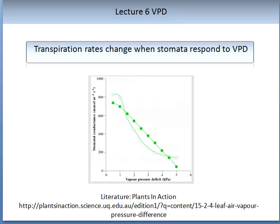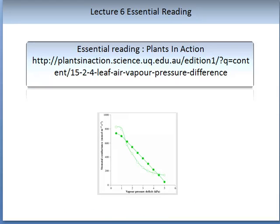Experimental evidence supports the link between VPD and transpiration rates. Stomata are responsive to atmospheric vapour pressure deficit so that potentially faster transpiration rates at low atmospheric humidity are constrained by the partial closure of the stomata — that is, a decrease in stomata conductance. Patterns of response differ between species. Common forms of stomata conductance response to vapour pressure deficit are shown here for leaves with initially high rates of gas exchange and photosynthesis. Please read Plants in Action at the link below, which explains in more detail the response between stomata conductance and VPD.